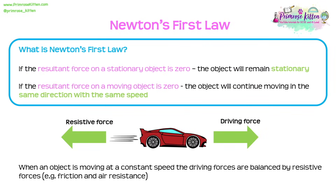Newton's First Law states that if the resultant force on a stationary object is zero, it will remain stationary. However, if the resultant force on a moving object is zero, the object will continue moving in the same direction with the same speed. When an object moves at constant speed, the driving force is balanced by resistive forces such as friction and air resistance, giving a resultant force of zero.